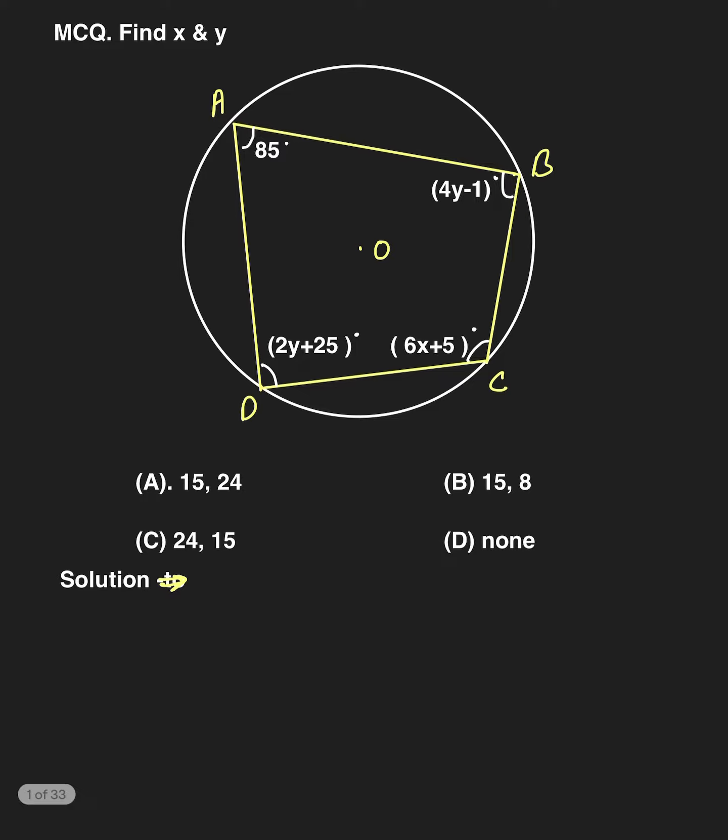Here, angle A plus angle C equals 180 degrees. And also, angle D plus angle B equals 180 degrees.